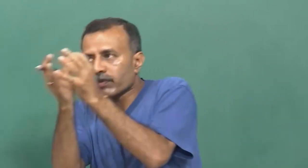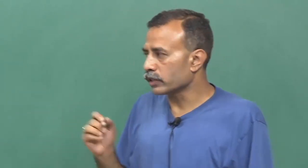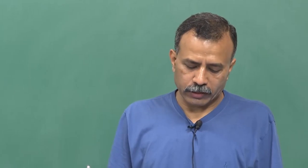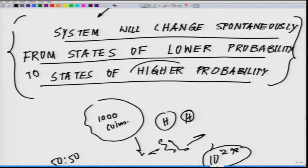Such orderliness can only be achieved if you put some intense energy at specific local spots. Otherwise, as per the second law of thermodynamics, the system is continuously heading more and more towards disorderliness. That is what the second law critically tells us — systems change spontaneously from states of lower probability to states of higher probability, and higher probability is more chaos.